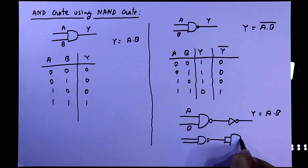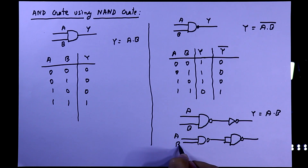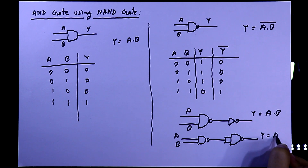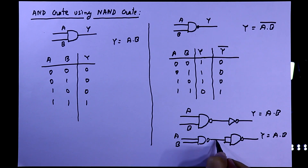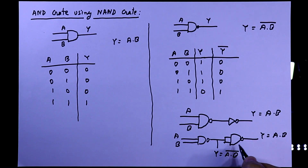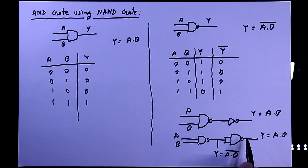We have to make NOT gate using NAND gate. Here the output is Y = (A · B)̄, and after applying NOT logic we will get the AND output. In the last video we already seen how to make NOT gate using NAND gate.